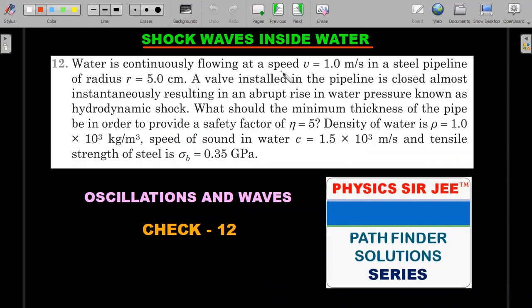Water is continuously flowing at a speed v = 1.0 m/s in a steel pipeline of radius r = 5 cm. A valve installed in the pipeline is closed almost instantaneously, resulting in an abrupt rise in water pressure known as hydrodynamic shock. What should the minimum thickness of the pipe be in order to provide a safety factor of η = 5, with density of water ρ = 1.0 × 10³ kg/m³, speed of sound in water c = 1.5 km/s, and tensile strength of steel σₛ = 0.35 GPa.